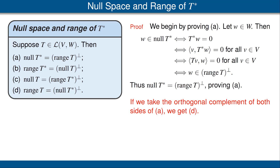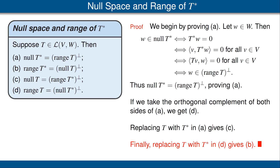Now, take the orthogonal complement of both sides of the equation in part A and use the result that doing the orthogonal complement twice gets us back to the original space. Then we get part D: the range of T is equal to the orthogonal complement of the null space of T star. Next, replace T with T star in part A and use the result that the adjoint of the adjoint gets us back to the original operator — this gives us part C. Finally, replace T with T star in part D, which we have already proved, and again use the result that the adjoint of the adjoint gives us back the original operator to get part B. This completes the proof of all four parts.